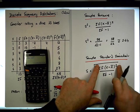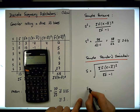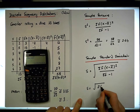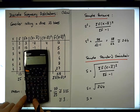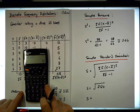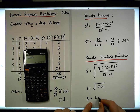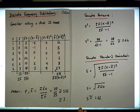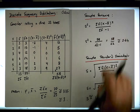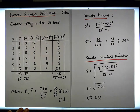We've already calculated the piece inside the root to be 2.64, so s must be equal to the square root of 2.64. The square root of 2.64 is 1.62, rounded to two decimal places. So the sample variance is 2.64 and the sample standard deviation is 1.62.